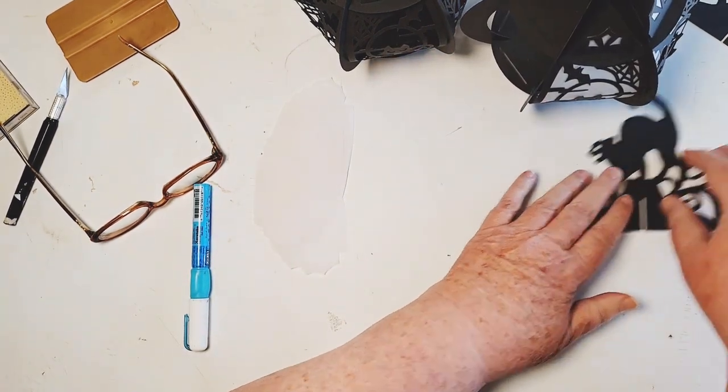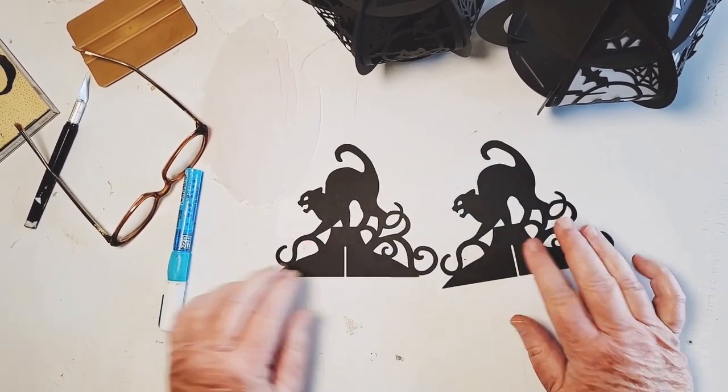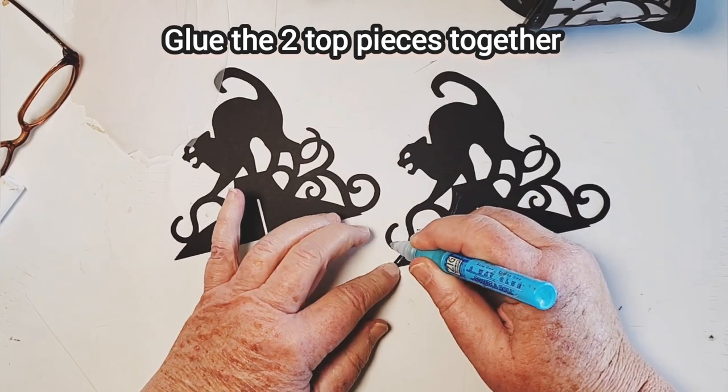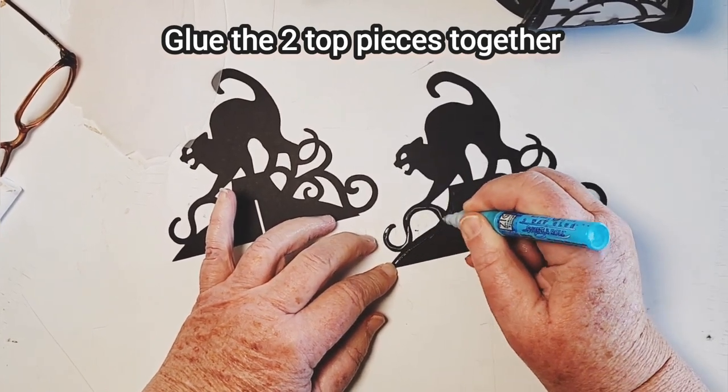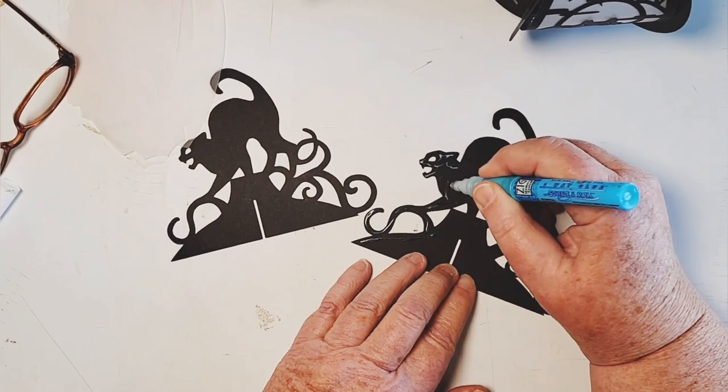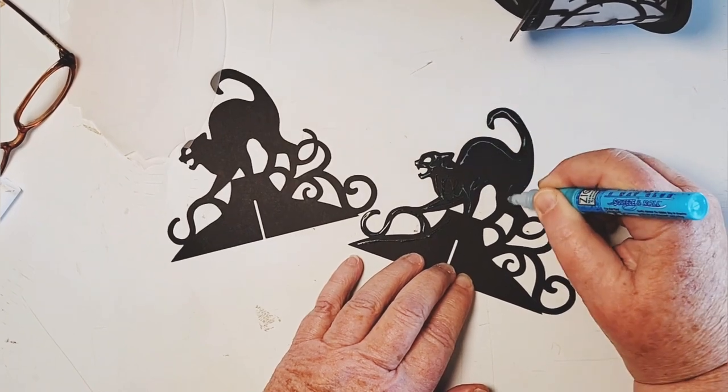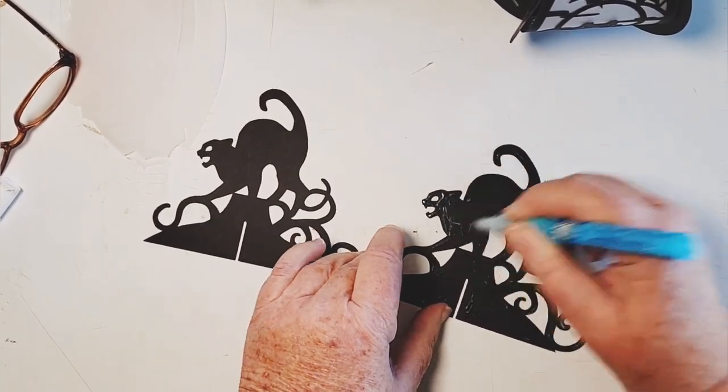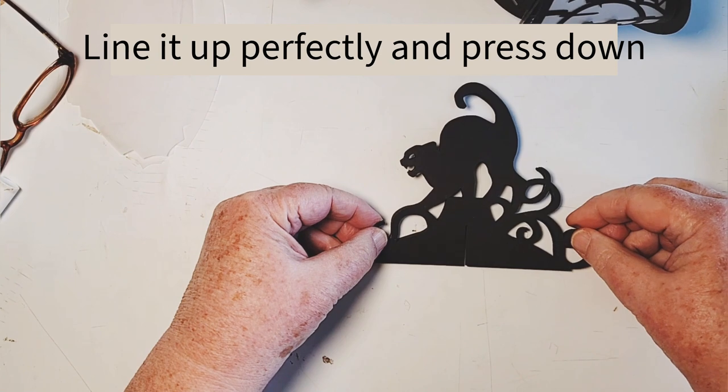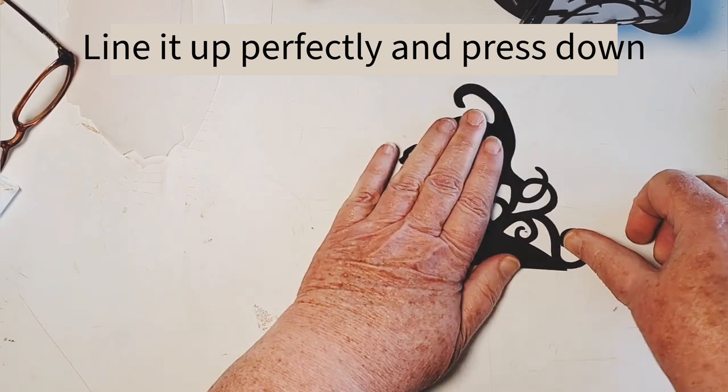So now last of all is the top. Now each of my different designs have a different top, but they're all going to go together the same. Same as the rest of this box. They all go together the same. So I'm going to put glue. I'm gluing two of these together because it gives it a little bit more reinforcement. Makes it a little stronger with all these pieces that are sticking up. A little bit less likely to get bent in day to day moving around and knocking things about. And then line them up as perfect as you can, as closely as you can, and press it down.